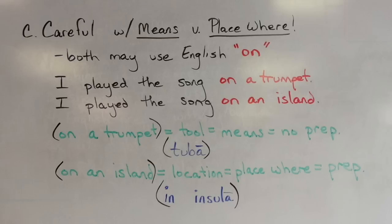On the other hand, 'on an island' is a location, so that is going to be ablative of place where, which does use a preposition. So we'll translate 'on' as the Latin preposition in, giving us in insula. Make sure that you write down ablative of means and ablative of accompaniment on your best friend. Have a great day. Bye later.